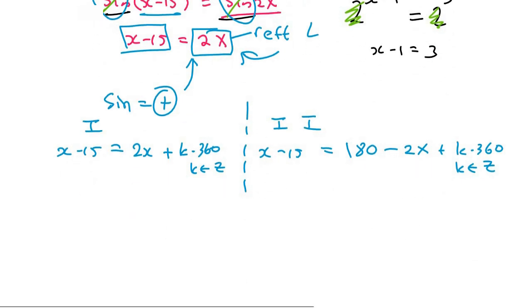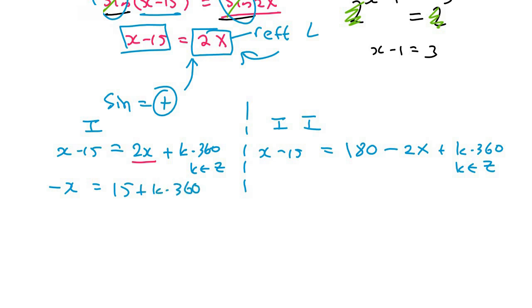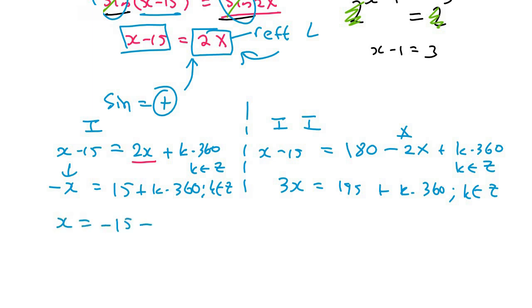Now solve as normal. For quadrant 1, bring 2x to the left: −x = 15 + k·360, so x = −15 − k·360, k ∈ Z. For quadrant 2, bring −2x to the left: 3x = 195 + k·360, so dividing by 3 gives x = 65° + k·120°, k ∈ Z.